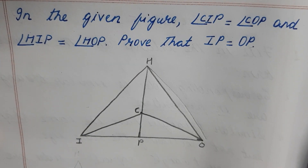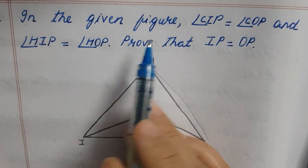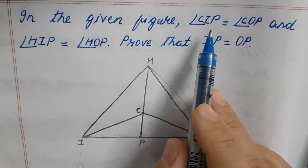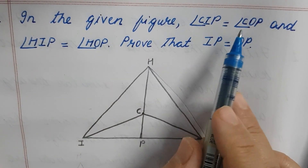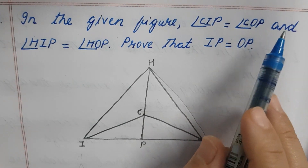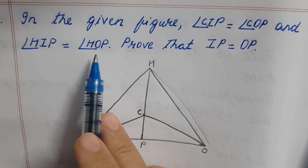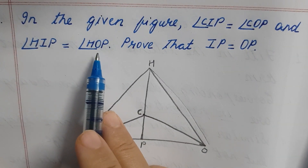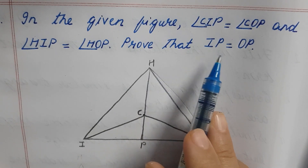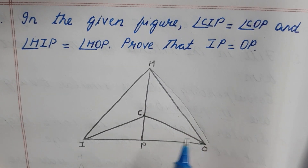Exercise 5.1, second sum. In the given figure, angle CIP is equal to angle COP and angle HIP is equal to angle HOP. Prove that IP is equal to OP.